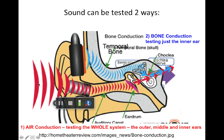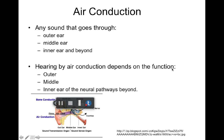With air conduction, compressive waves come in through the pinna and the ear canal, bounce off the middle ear, stimulate the hair cells in the cochlea, and send the message to the brain. So air conduction testing goes through the outer ear, the middle ear, the inner ear, and beyond.